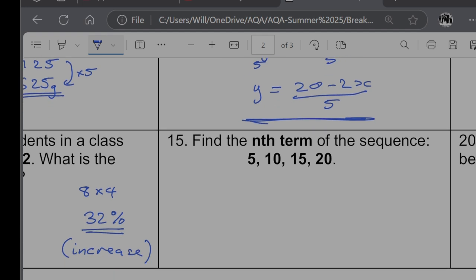Question 15. Find the nth term of this sequence. So quite a nice one. We've got a common difference here of 5. So it's got to start with a 5n. And then what do we need to do to the term 5 to get to the number 5? Nothing at all. So it is just 5n.